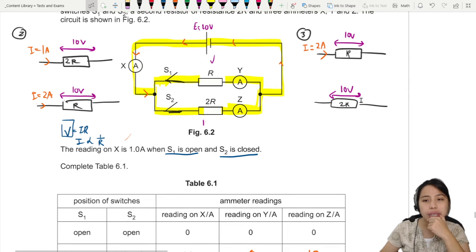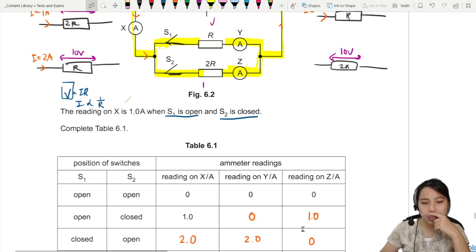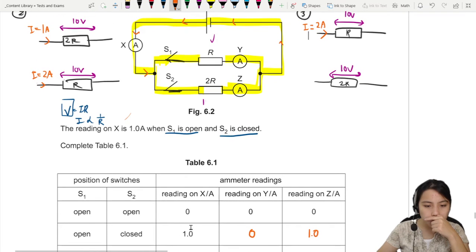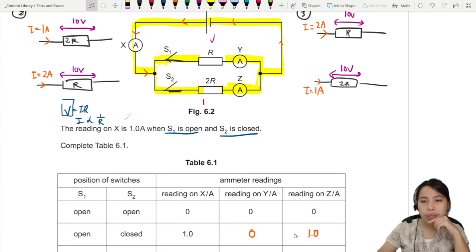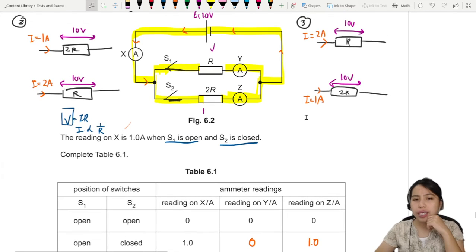When you have 10 volts, you have 2 amps. This one though. 10 volts and 2R. This one is a throwback to our very first scenario here. When you open switch 1 and close switch 2. We had 1 amp going through the meter Z and meter X. So it should be 1 amp. This is from the earlier scenario which I didn't draw out.